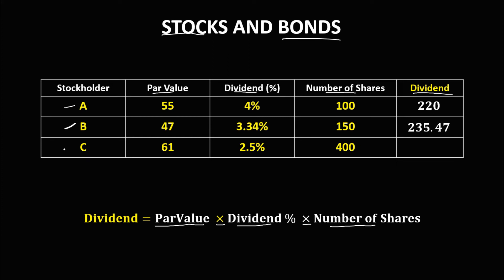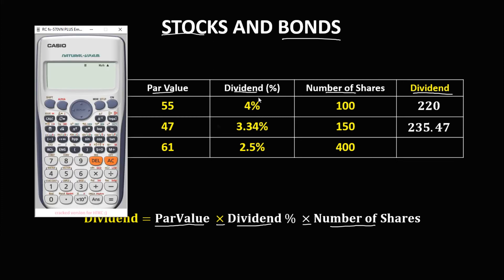For Stockholder C, the dividend percentage is 2.5%. Convert 2.5 to decimal by dividing by 100, then multiply by the par value of 61, then by the number of shares, which is 400.